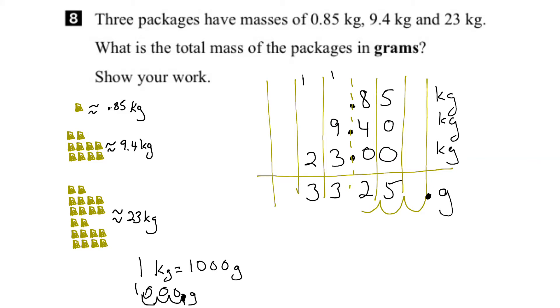And what you might notice now is that we have this gap here between the 5 and the decimal. Well, we can fill that gap with a 0 as a placeholder. So what's the total mass in grams? It would be 33,250 grams. And there you go.